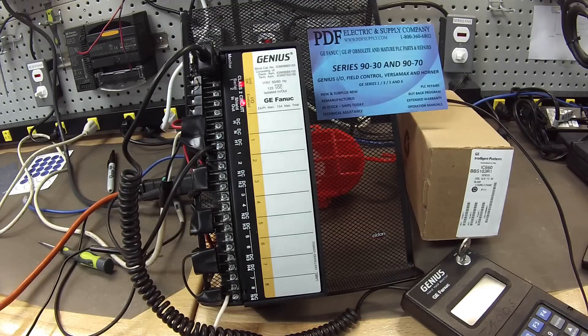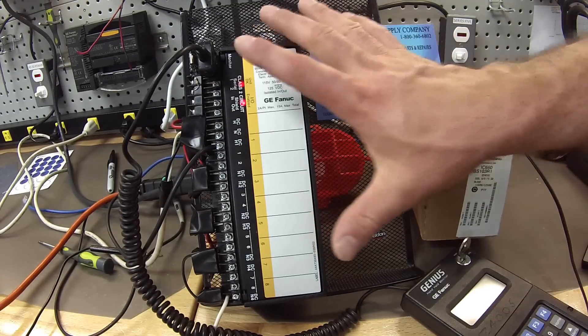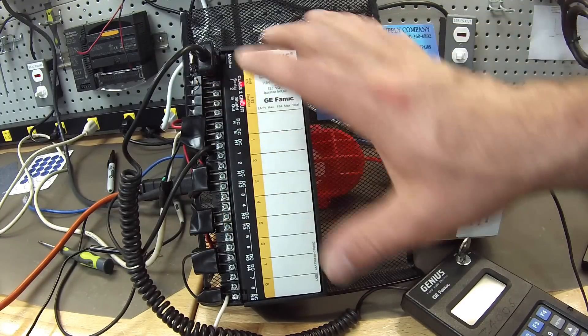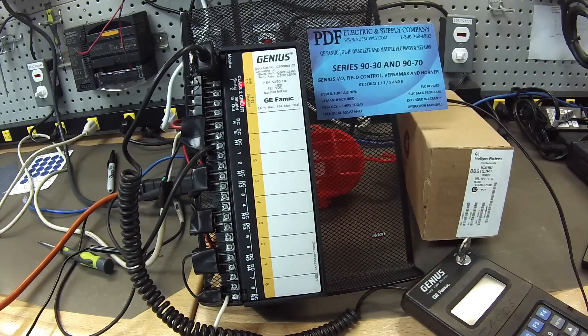What that's telling me is that the Genius Bus controller and the Genius Block are talking through this serial port. The communication is working properly, so I'm satisfied with that.